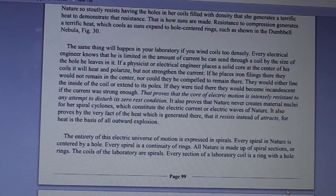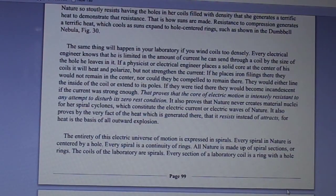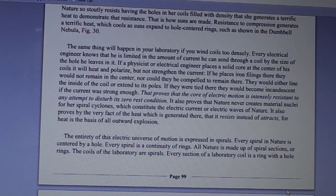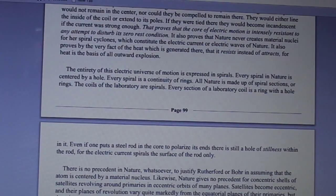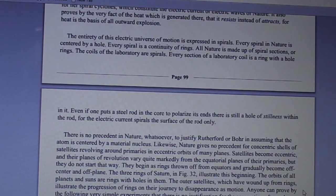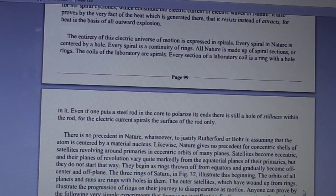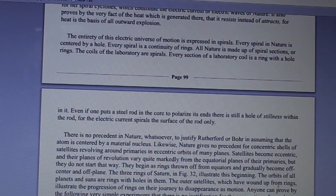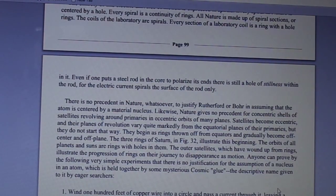The entirety of this electric universe of motion is expressed in spirals. Every spiral in nature is centered by a hole. Every spiral is a continuity of rings. All nature is made up of spiral sections or rings. The coils of the laboratory are spirals. Every section of a laboratory coil is a ring with a hole in it. Even if one puts a steel rod in the core to polarize its ends, there is still a hole of stillness within the rod, for the electric current spirals the surface of the rod only. There is no precedent in nature whatsoever to justify Rutherford or Bohr in assuming that the atom is centered by a material nucleus.